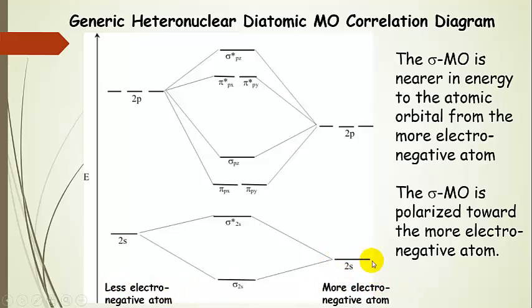Now, more of this atomic orbital, say the 2s, from the more electronegative atom, it's going to contribute more to the bonding molecular orbital. So you can see there's less of an energy difference between the more electronegative atomic orbital 2s and this bonding MO.